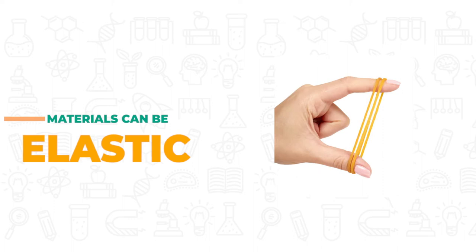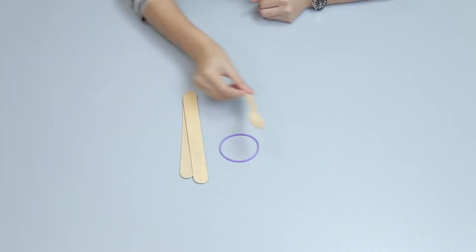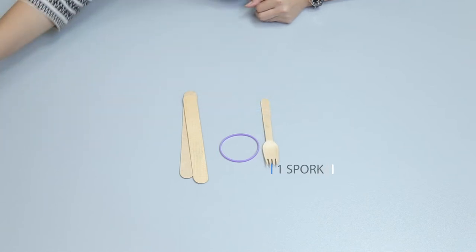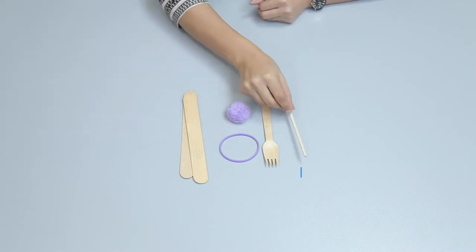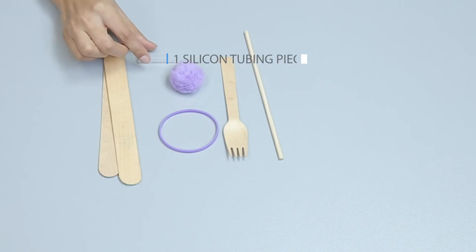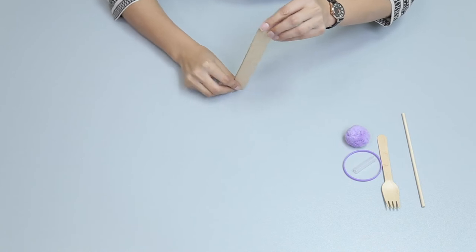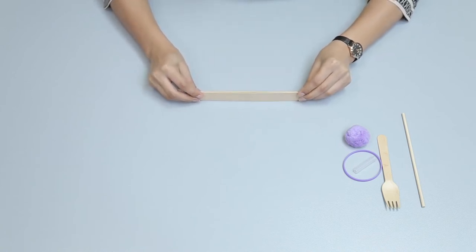Materials can also be elastic. Let's make a prototype with items from the kit. We need a rubber band, two craft sticks, one spoke, one pom-pom, one wooden rod, and one piece of silicon tubing. First, take two craft sticks and one spoke.